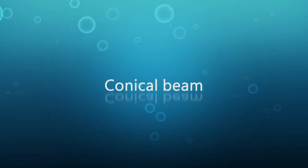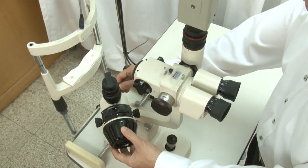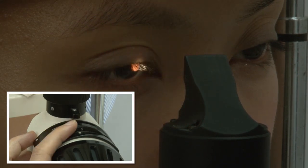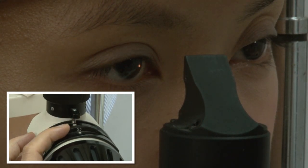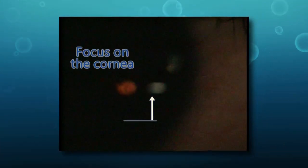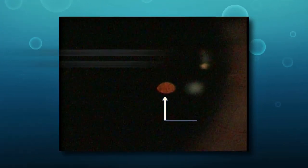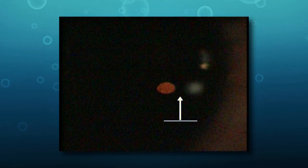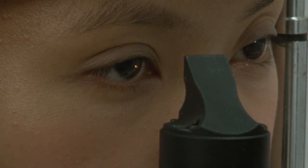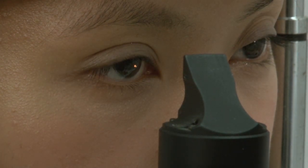Conical beam: first, set the angle between the light source and the observation system at about 45 degrees. Set the light source intensity to high, dim the room light, and set magnification to high. Adjust the light source aperture to the smallest size, or reduce the height of a parallelepiped until it becomes a small spot. The two reflections visible are from the cornea and the iris. Begin by focusing the beam on the cornea, then move the joystick forward to focus on the iris, and move it back half that distance to the midpoint of the anterior chamber — this is the area to view for cells and flare. A conical beam is used to detect the presence of cells and flare in the anterior chamber; there are no clinical signs present in this healthy eye.